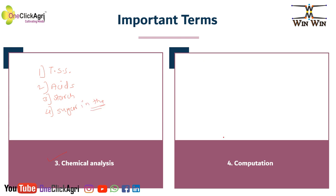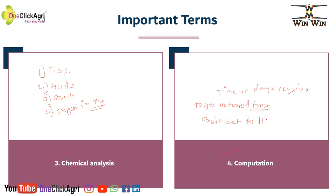In Computation, it means the time or dates required to get matured from fruit harvesting. Please remember this — this falls under the computation method.